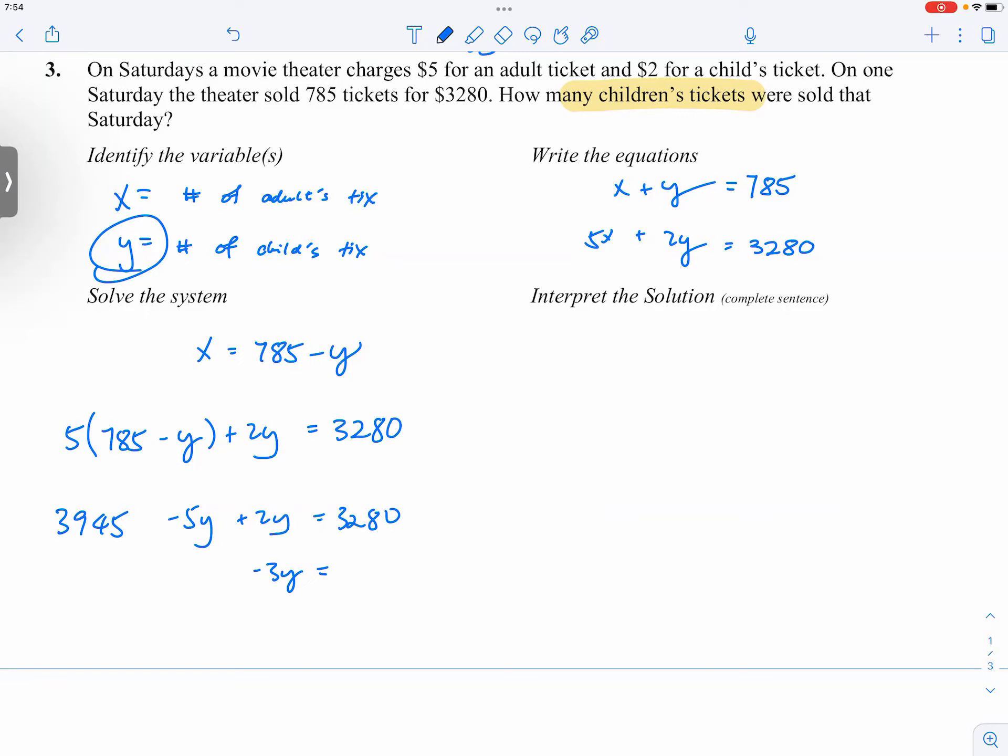Okay, so you've got negative... what is it... 3945 minus 3280, so three is gone...